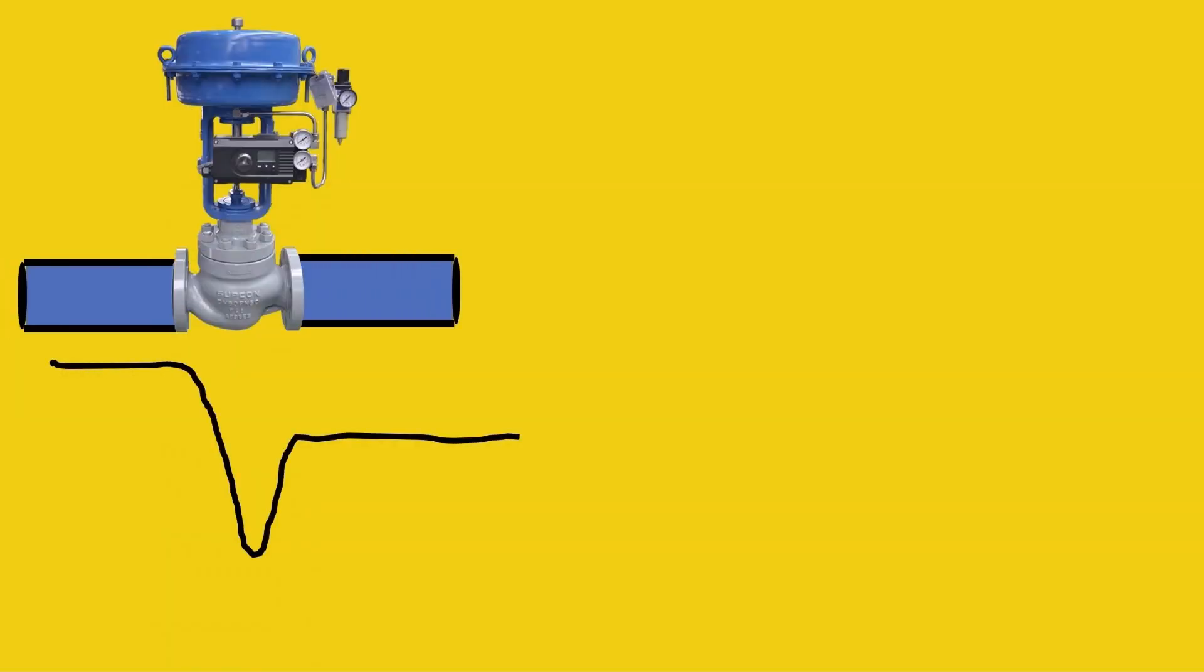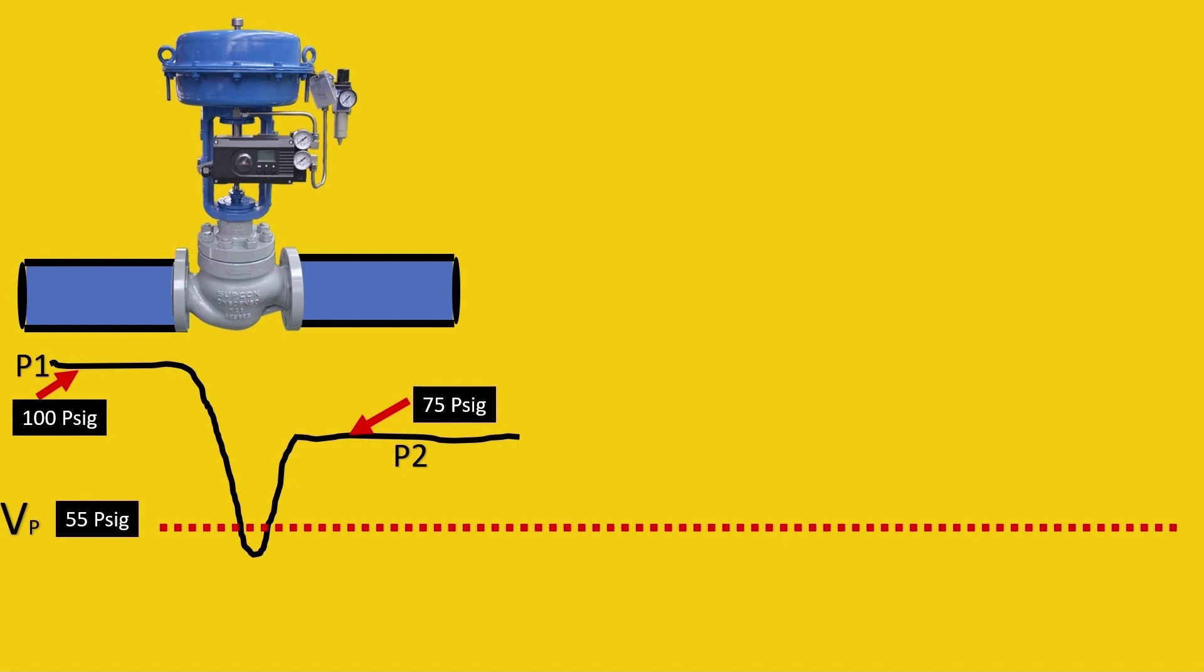Here is our valve and here is our pressure drop that happens across the valve. Let the pressure drop across the valve P1 be 100 psi and the pressure P2 after the pressure drop let it be 75 psi. What happens here is let the vapor pressure be 55 psig. So the curve is going below the vapor pressure, so cavitation will happen.